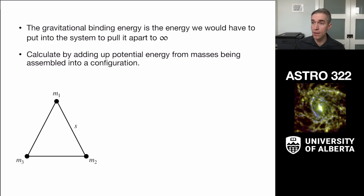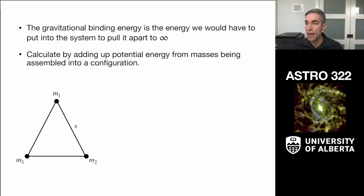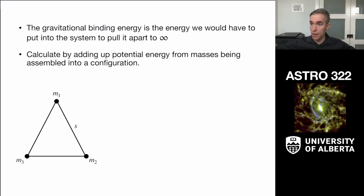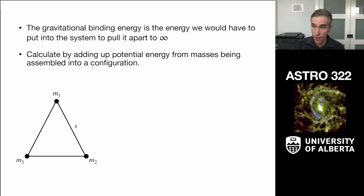Given that potential energy, we want to define the gravitational binding energy of an object — not considering pairs of separate objects, but an object made of individual components. We need to figure out how much energy it would take to pull that object apart to infinity, separating its constituent parts. We calculate this by computing the potential energy of assembly as the components are brought together.